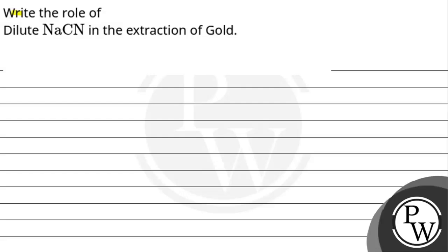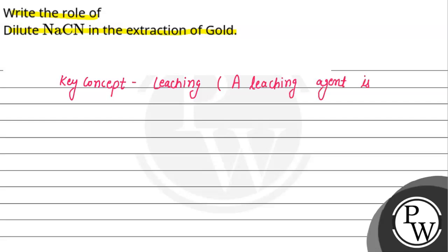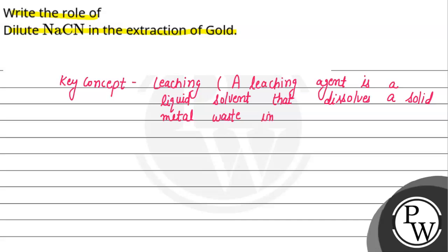Let's read this question: write the role of dilute sodium cyanide in the extraction of gold. The key concept for this question is leaching. A leaching agent is a liquid solvent that dissolves a solid metal or its ore in a process called leaching.